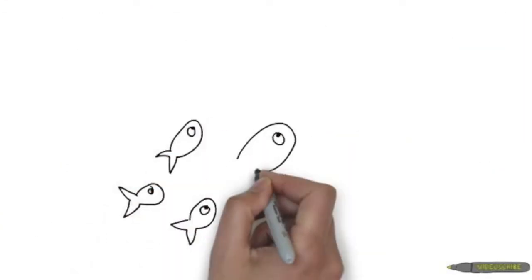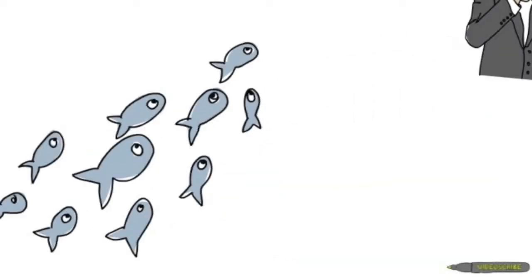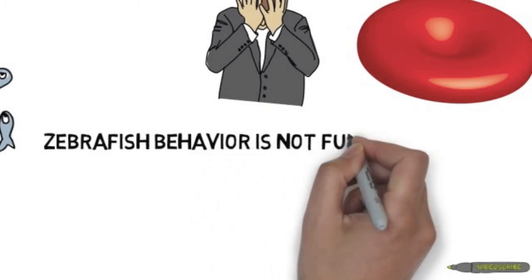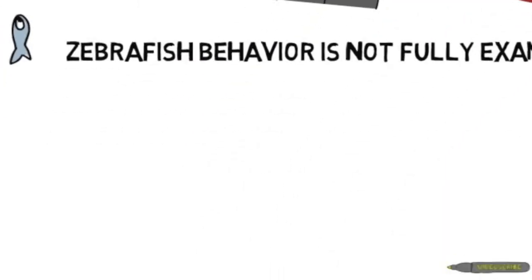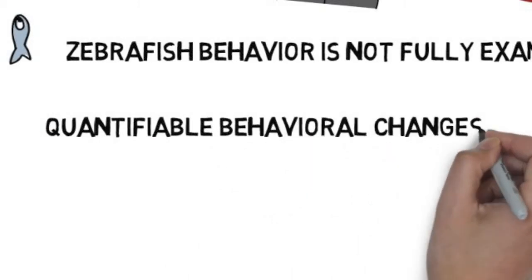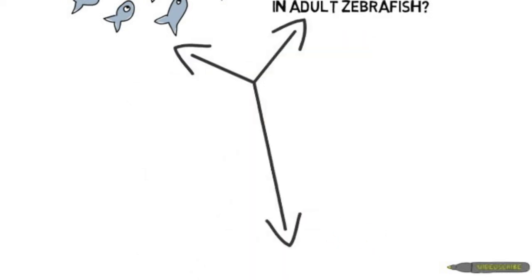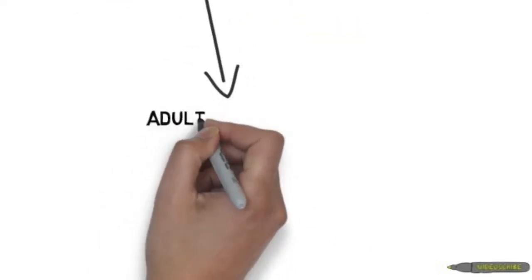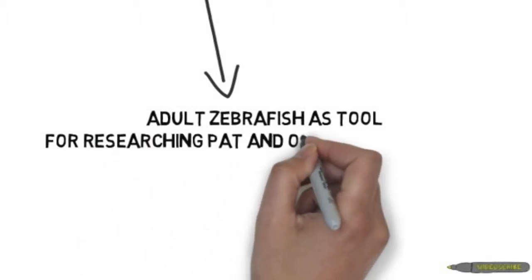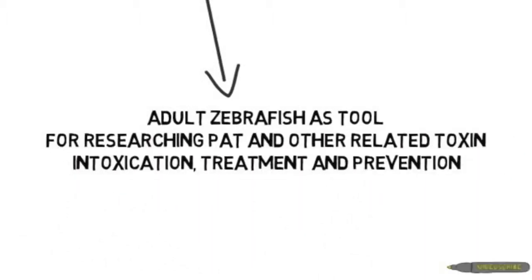What about zebrafish? Zebrafish is a small freshwater species that has recently become popular in many fields of study. However, zebrafish behavior is not fully examined. Therefore, if we can show that patulin induces quantifiable behavioral changes in adult zebrafish, then adult zebrafish can be used as a research tool in tackling the issues of patulin and other related toxin intoxication treatment and prevention.